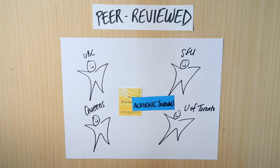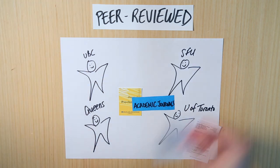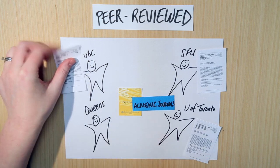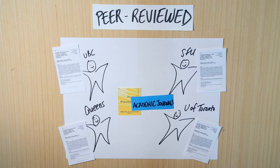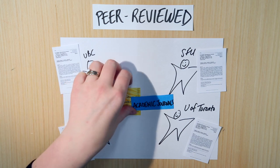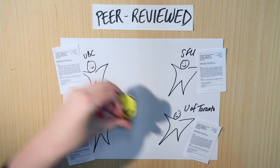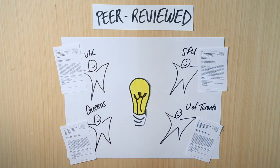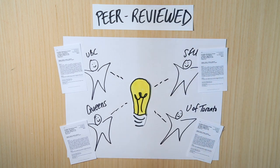They communicate through academic journals. What each of these people will do as they do their research is they will write a paper. Each person's paper gets submitted for publication in an academic journal, and that is how they will each know what the others are doing. They'll be able to see what the current state of knowledge is in that area. The academic journal is the tool they all use to create shared collective knowledge.